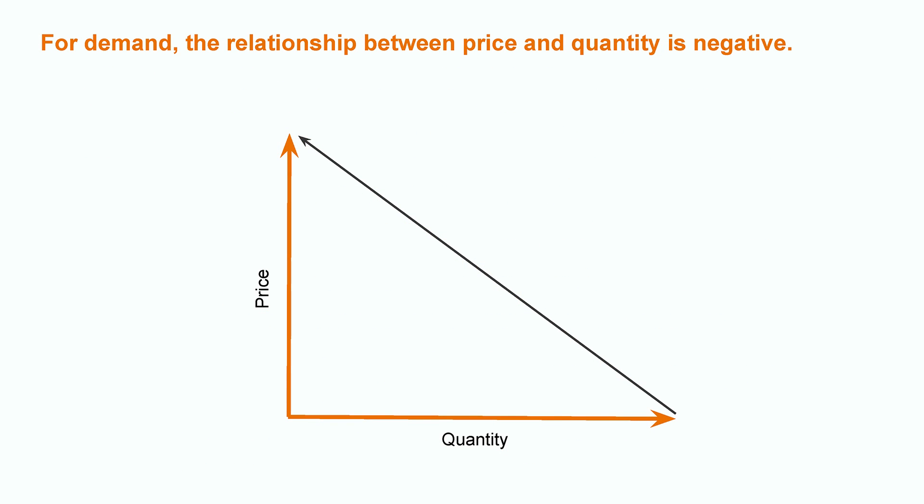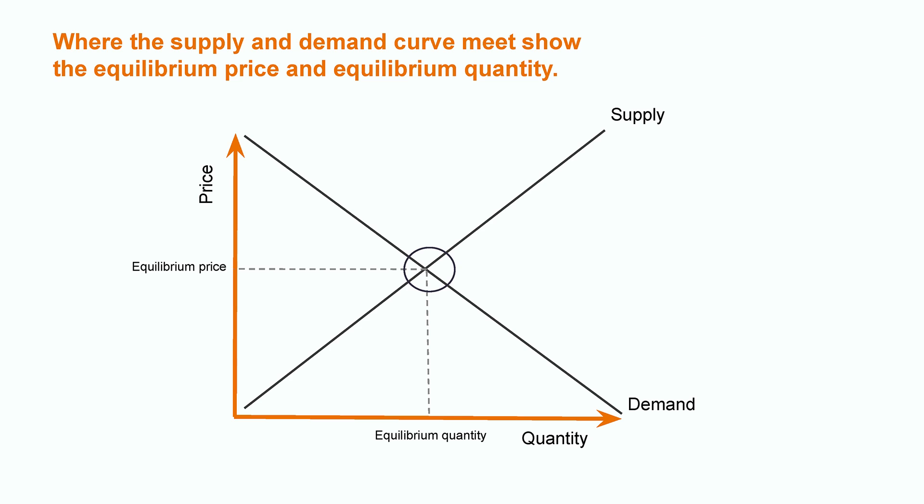Demand follows an inverse logic compared to supply. For the consumer, as prices go up, the quantity they are willing to buy decreases. Where the supply curve and demand curve meet, here are the equilibrium price and the equilibrium quantity — this is the quantity that will be produced and sold, and the price at which it will be sold. This graph produces a global vision of the market for a certain good.